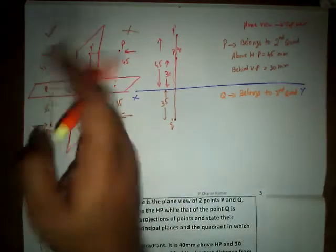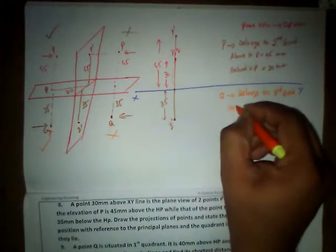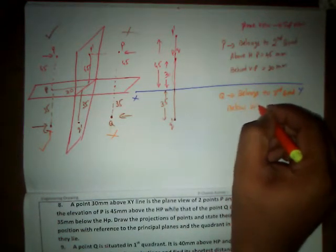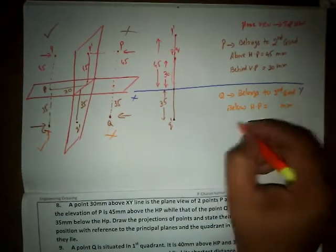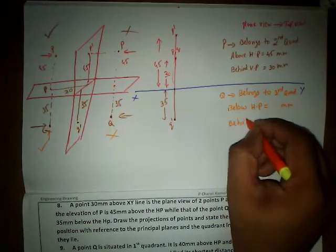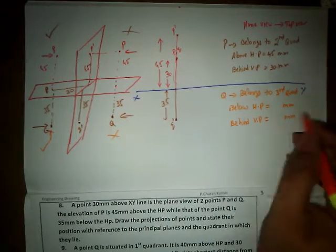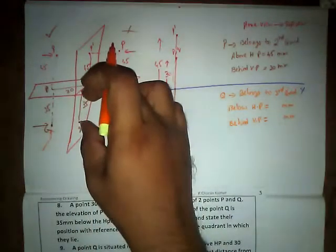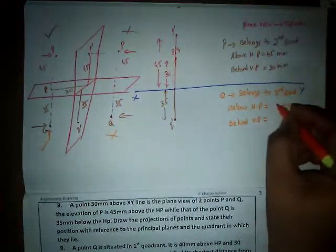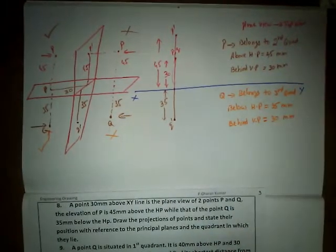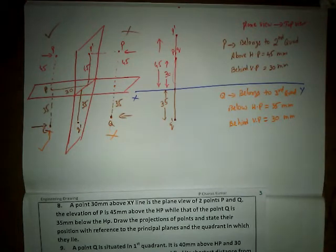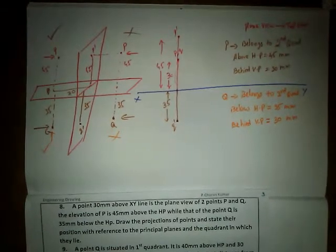According to the third quadrant, the point is below HP and behind VP. Below HP equals 35mm, and behind VP equals 30mm. We are completely done with the projections of these points. Hope everyone understood the complete task — thank you so much.